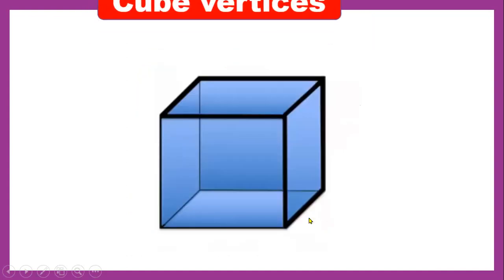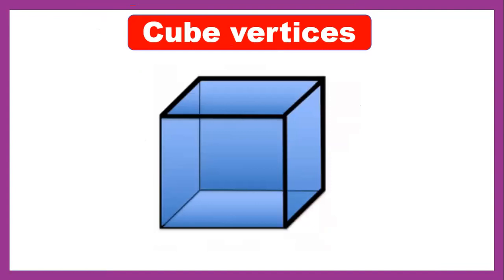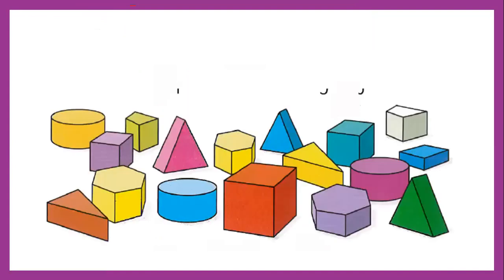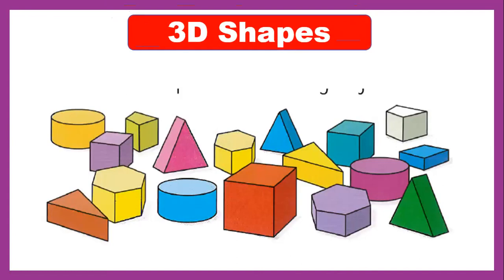Let's find out how many vertices: one, two, three, four, five, six, seven, eight. So this cube has eight vertices. Please look on page 67 where you can find some 3D shapes. You need to find where is the cube, where is the hexagon.